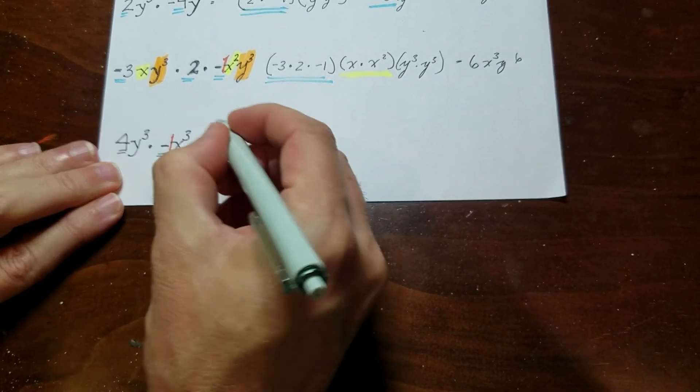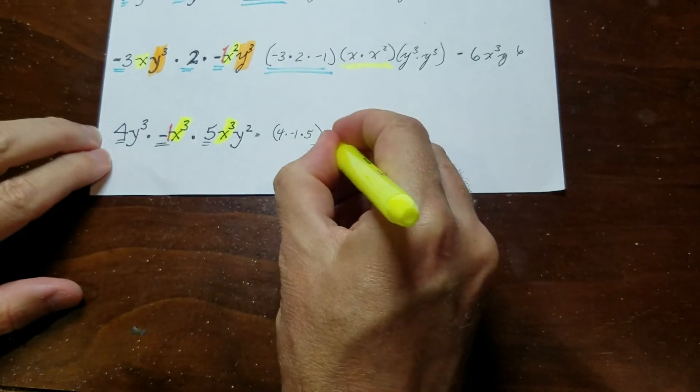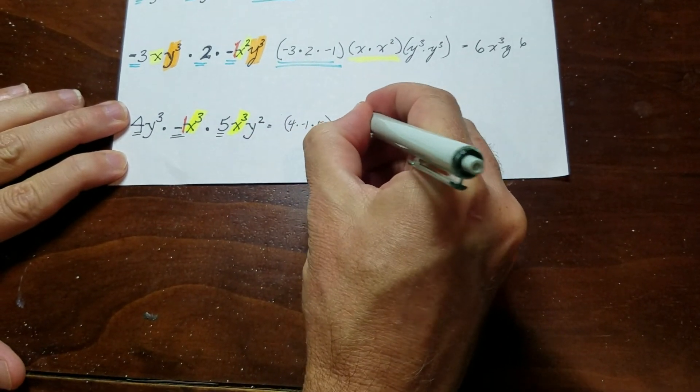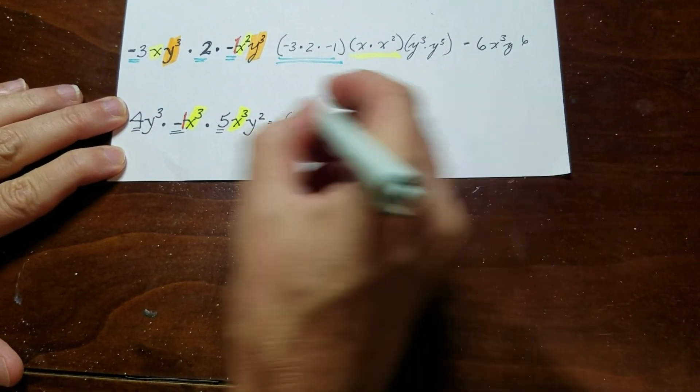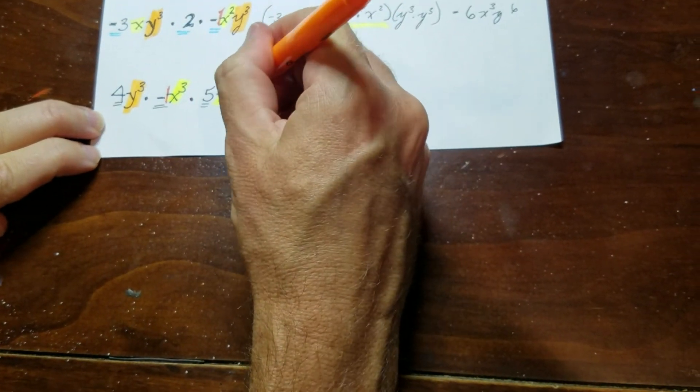And I have, looks like an x to the 3rd here and an x to the 3rd here. So I'll organize those. And then it looks like I've got a y here and a y here.